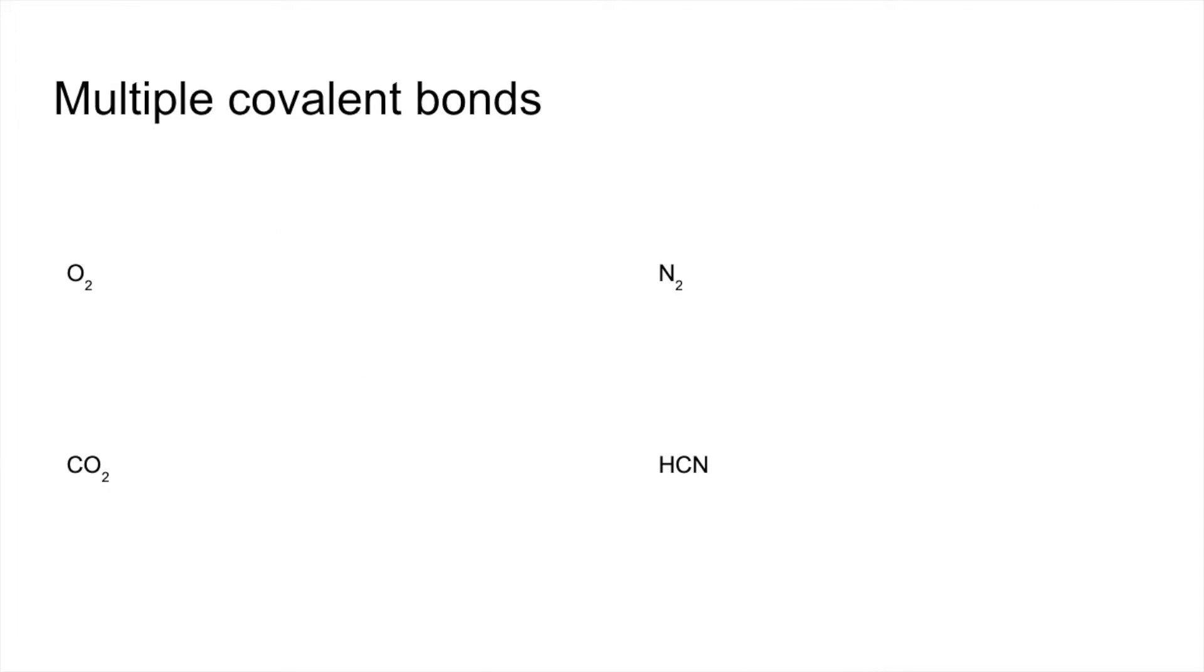So moving on to multiple covalent bonds now. These are bonds that involve the sharing of more than one pair of electrons between the bonded atoms. So far we've only dealt with single covalent bonds. In other words, on this slide we're looking at things like double bonds and triple bonds.